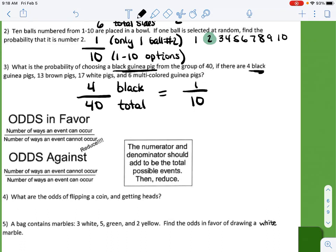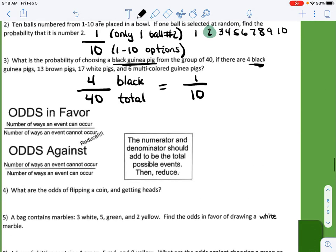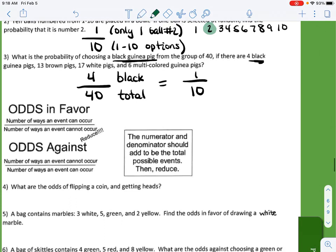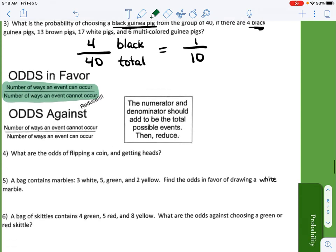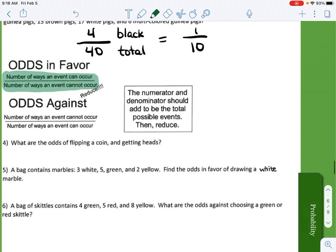Now we are going to move on and talk about odds in favor or odds against. Odds in favor is the number of ways the event can occur over the number of ways the event cannot occur. We also have odds against is the number of ways the event cannot occur over the number of ways an event can occur.